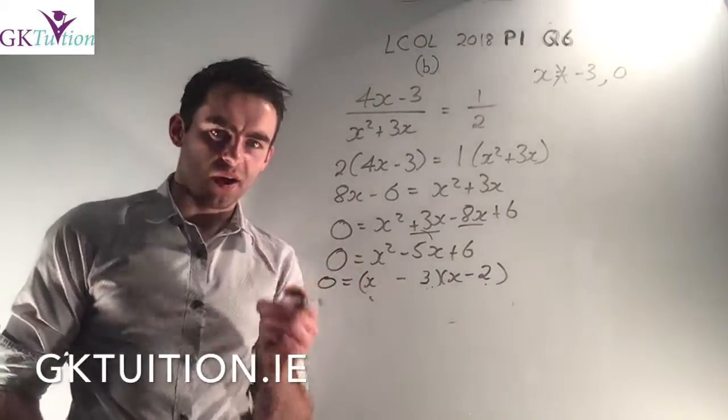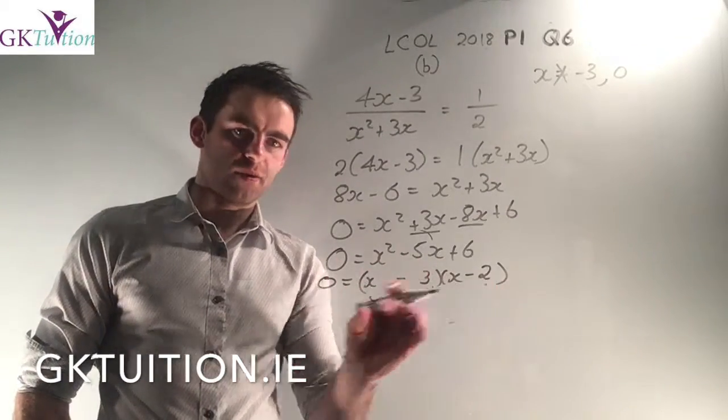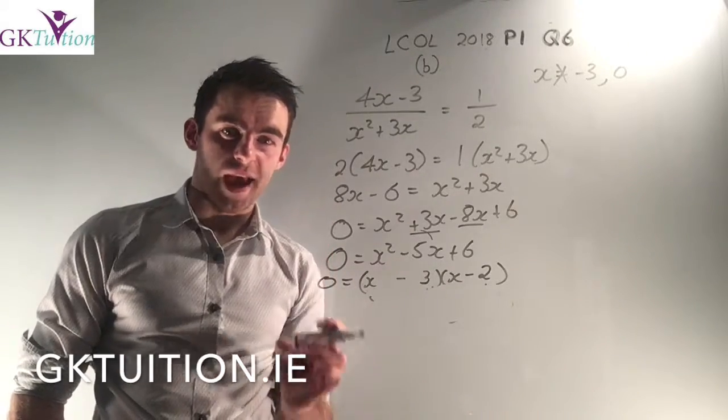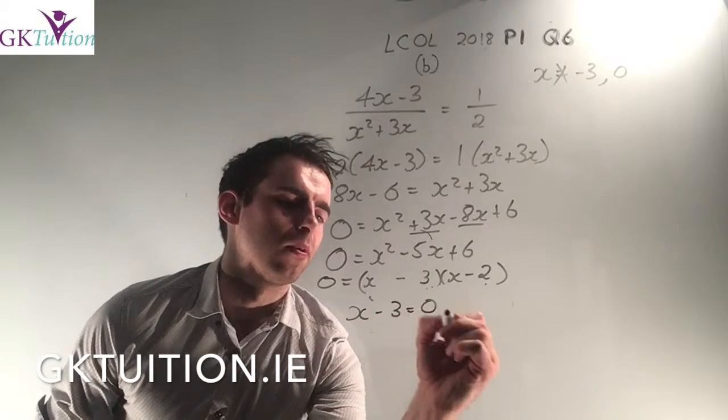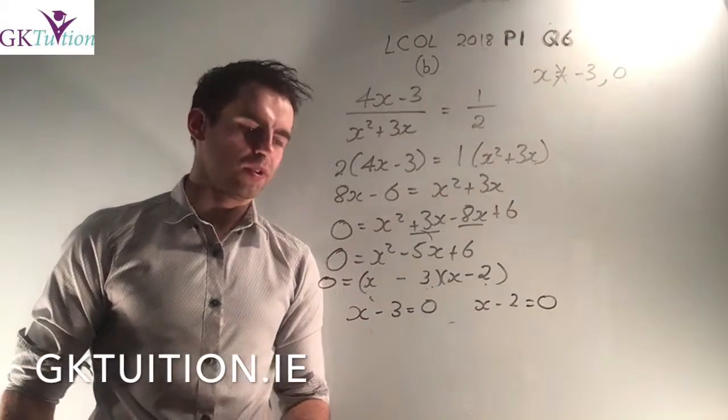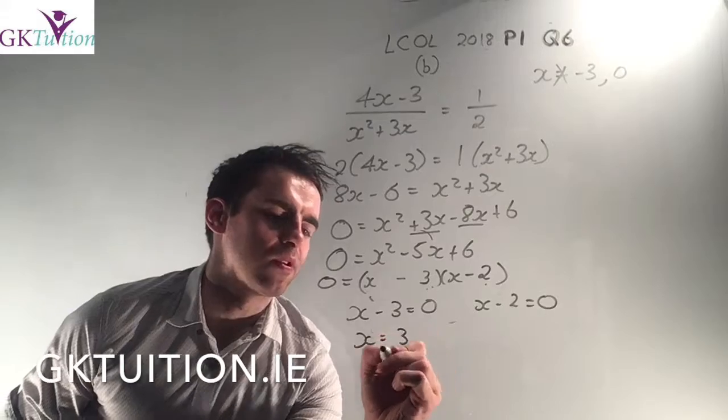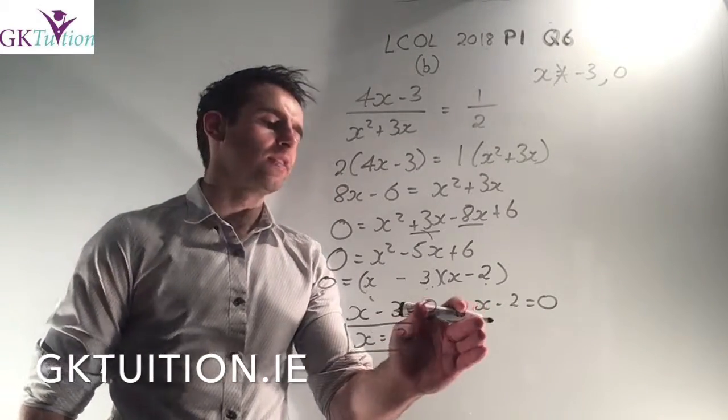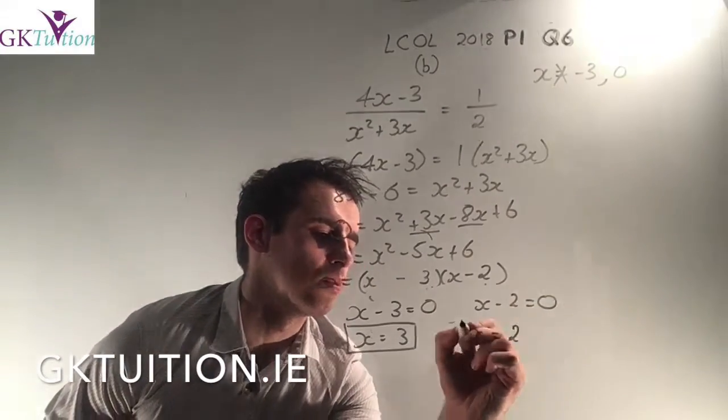But the question said to solve this one. So I don't want the factors. If it said factorize, that would be my answer. But if it says solve or find the solutions, that means I need to find the value of x. So now I need to let each factor equal to 0. I can say that (x-3) = 0 and (x-2) = 0. So to get x on its own, I add 3 to both sides and I get x is equal to 3. That's my first solution. And on the other hand, if I have (x-2) = 0, I add 2 and I get x equals +2. So that's my second solution.